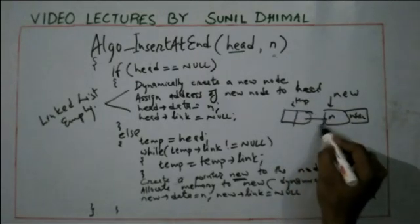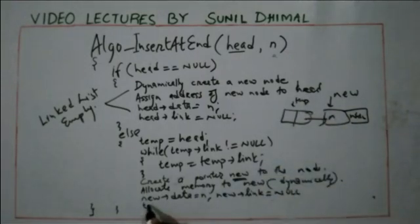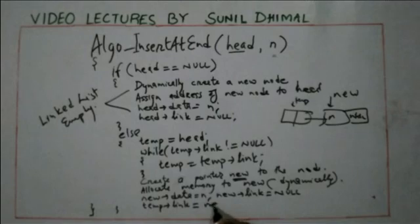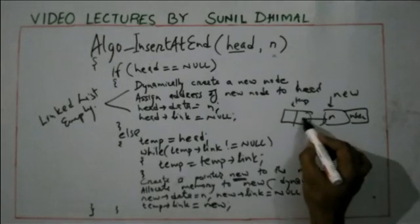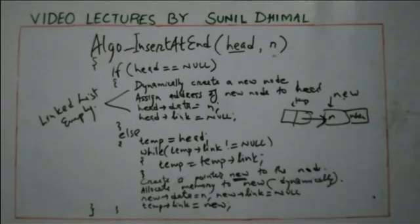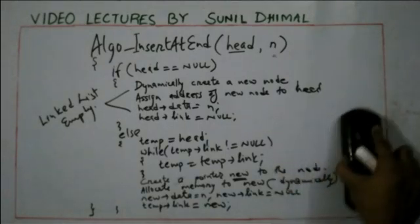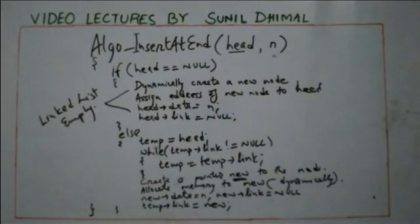Now, we need to make the link of temp point to the new node. So temp link is assigned to new. That's all — that is the complete logic for inserting an element at the end of the list.